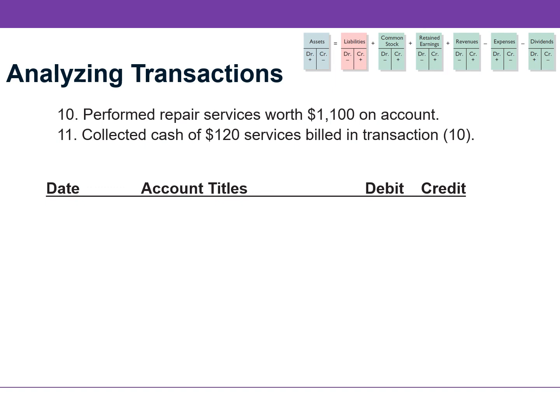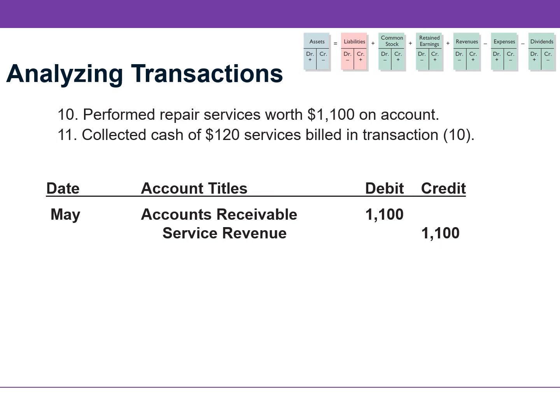For transaction number 10, we identified that both accounts receivable and revenue were increasing. Assets increase with debits and revenue increases with credits. So we would DEBIT accounts receivable and credit service revenue for $1,100. Lastly, in transaction number 11, we identified cash increasing and accounts receivable decreasing. Both of these accounts are assets, so we DEBIT cash and credit accounts receivable for $120.